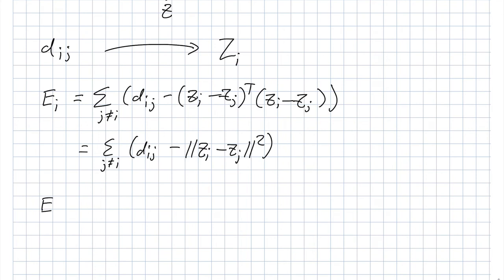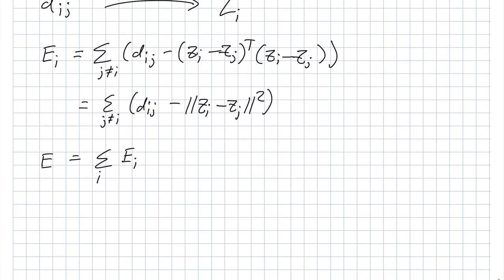And the full cost function is just the sum of these. And so the optimization problem that we have is that we want our z's to be equal to arg min z of E. And in some sense, E is really a function of all of the z's that we have. So what this says is pick my z's such that I minimize the error between the distances in the new space and the distances in the original space.